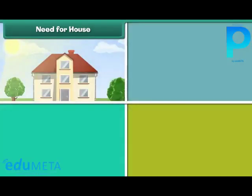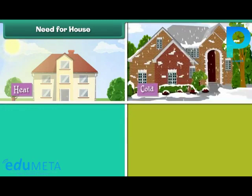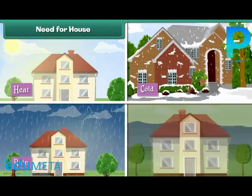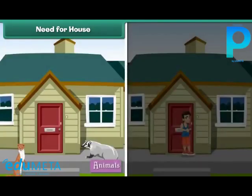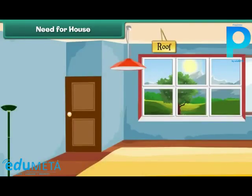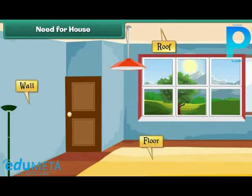A house protects us from heat, cold, rain, wind, animals, and thieves. A house has a roof, walls, floors, doors, and windows.